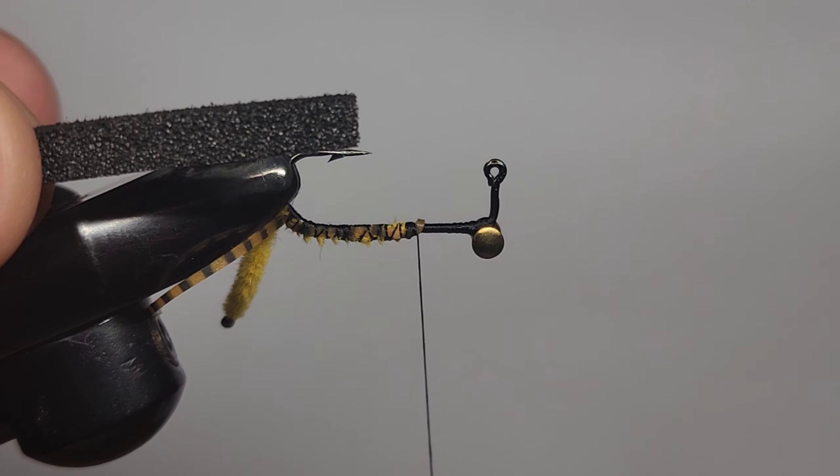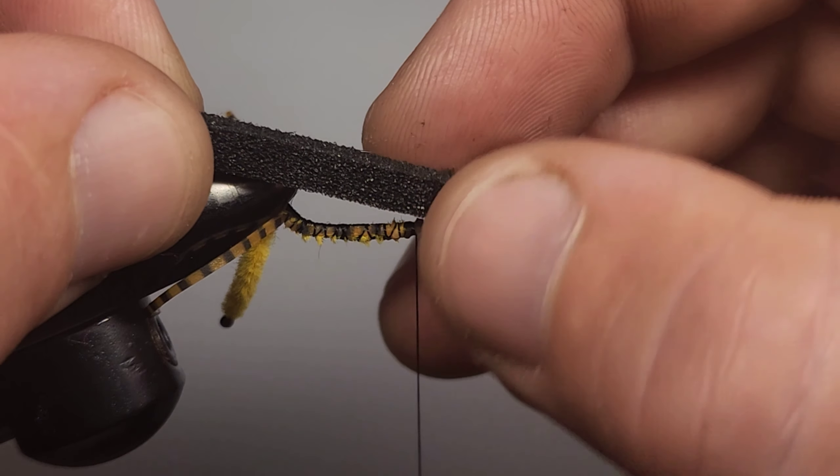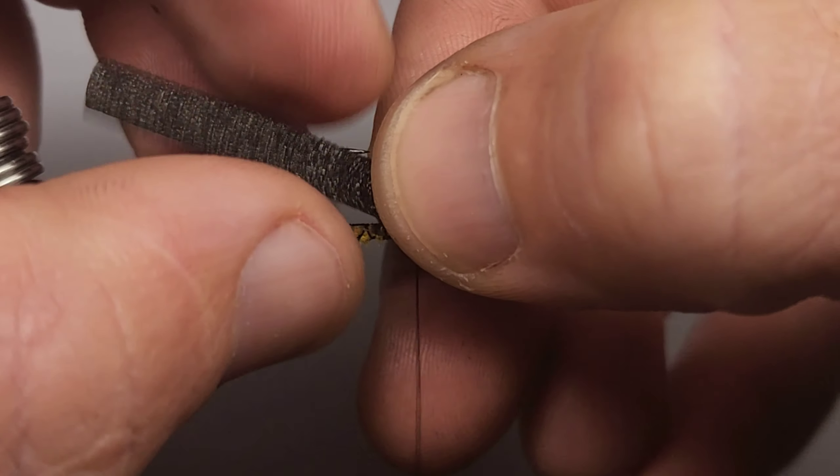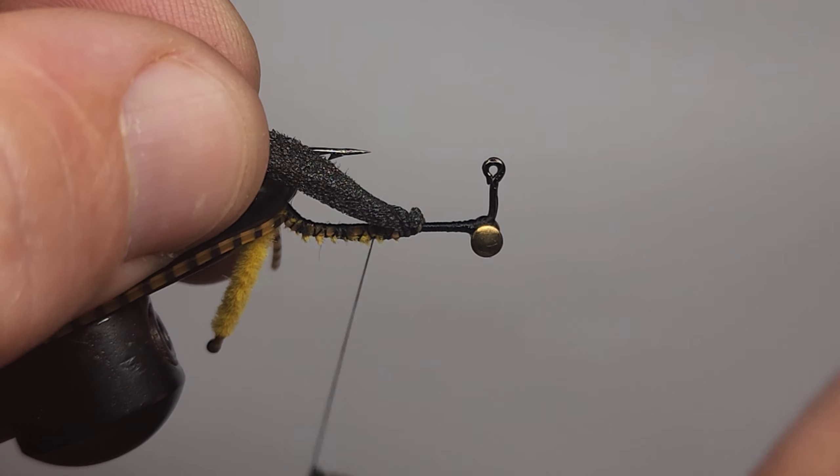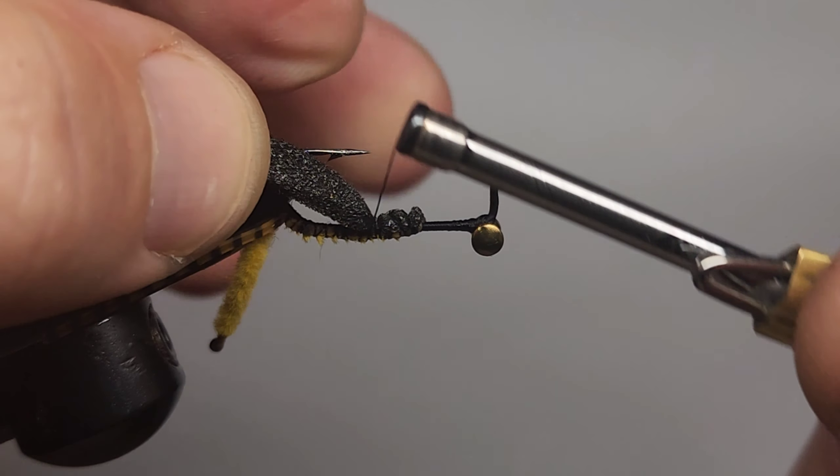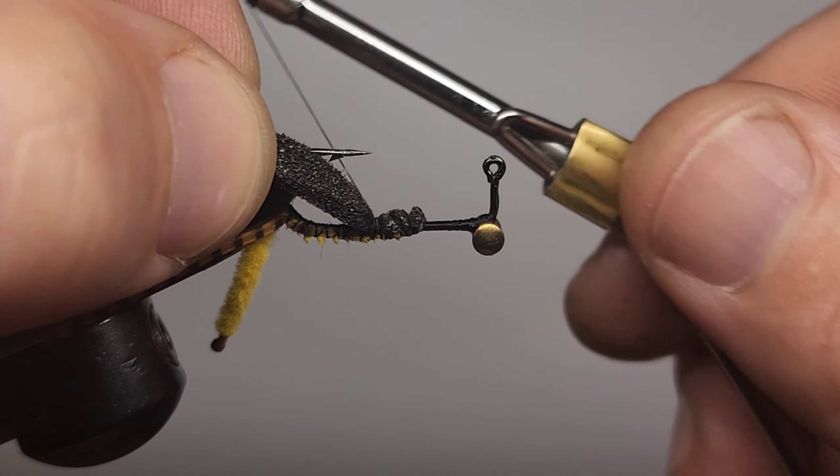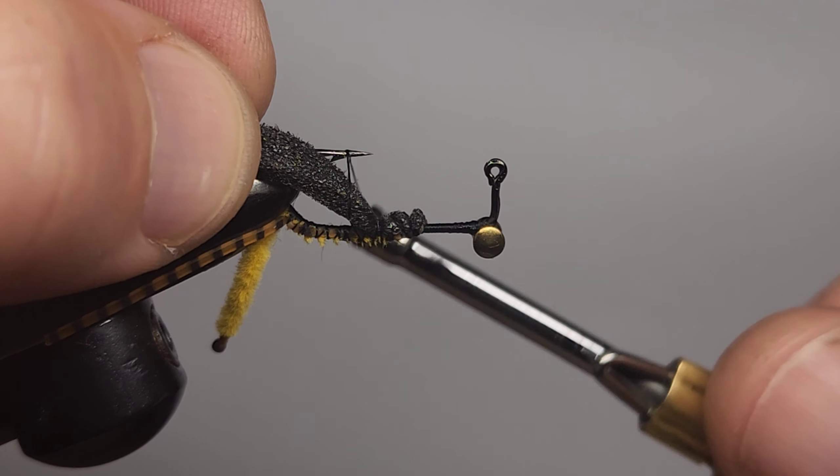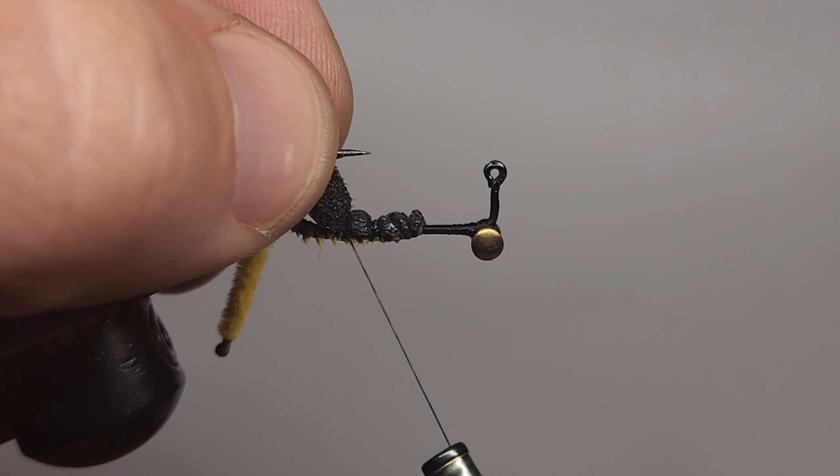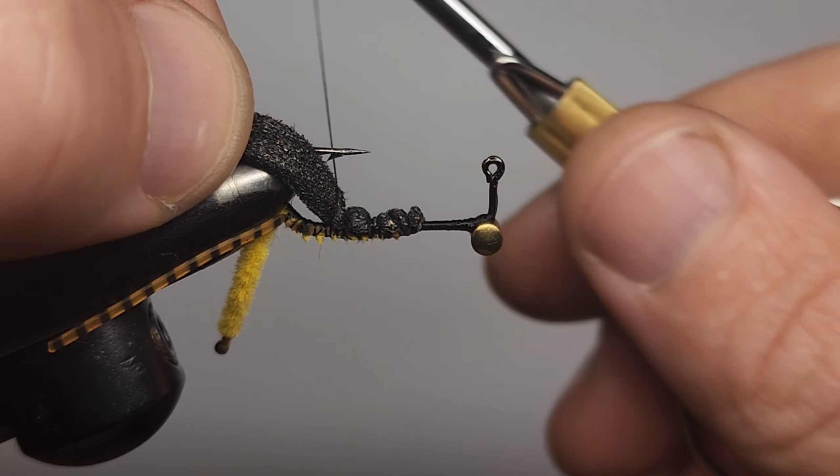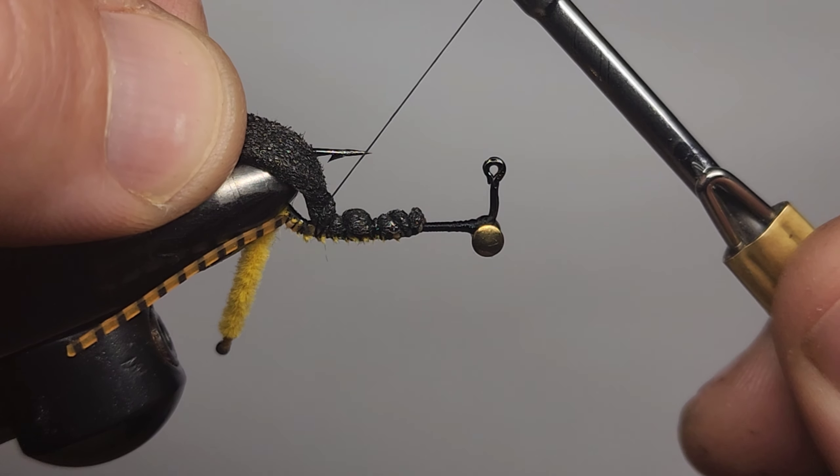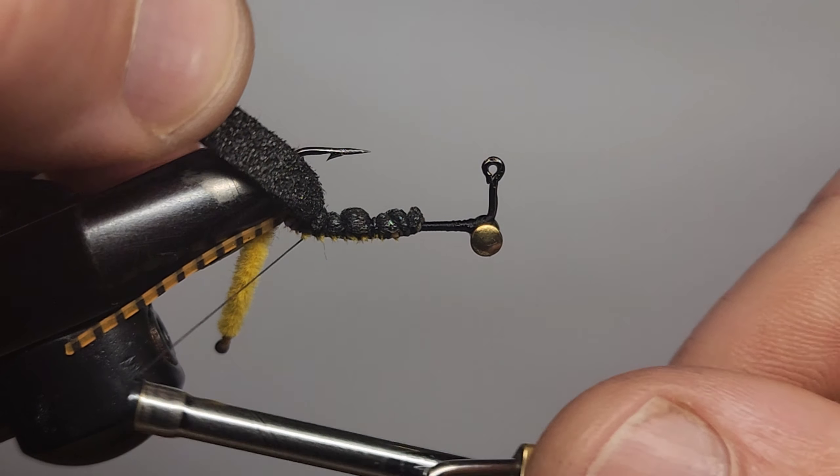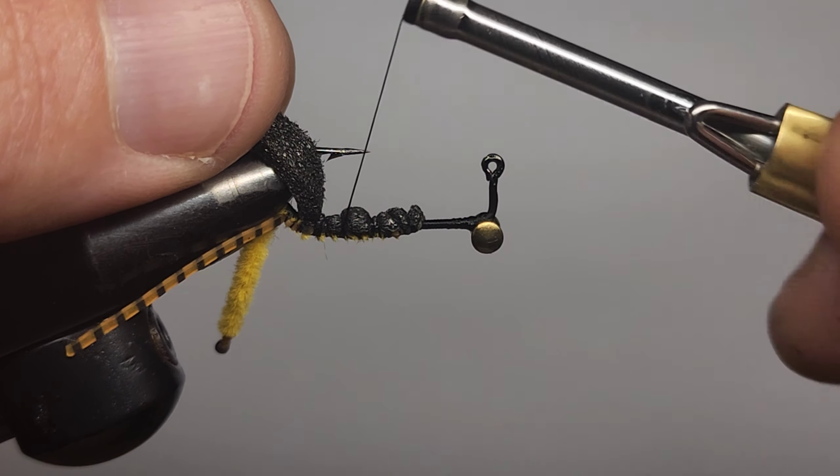Now we're going to get our foam. Two millimeter foam. Four millimeters wide. And we're going to tie it in along here. Along this hook shank. It's a bit of a tricky one. But you want to get it in there like so. Just play with it. I'm happy with that.